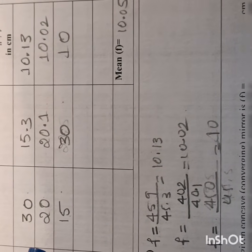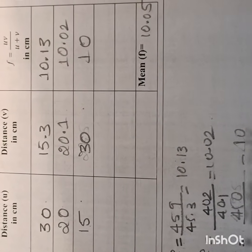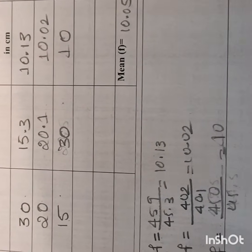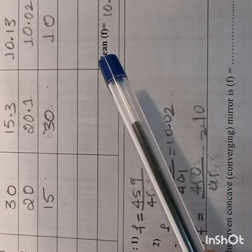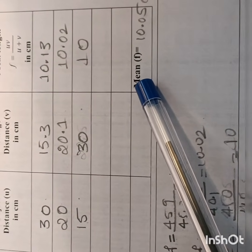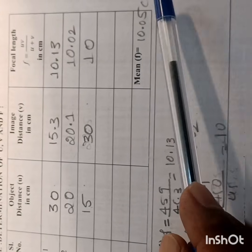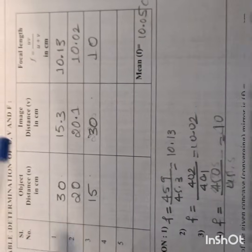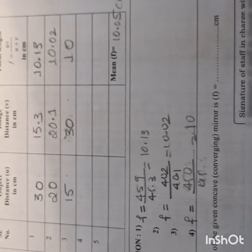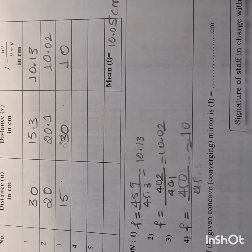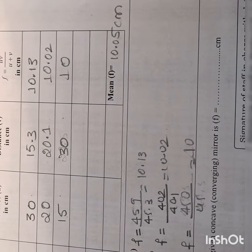In this way, we can take 5 observations and then find the mean value of focal length, which in this case is found to be 10.05 cm using the relevant equation. The readings are calculated and the final result is tabulated as 10.05 cm. Thank you, students.